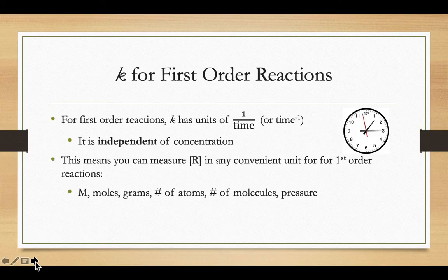The K for first-order reactions has units of one over time. It's independent of concentration. There is no concentration factor there in that value of K. There's no moles per liter or anything like that. So what that means is if it's more convenient for you to measure your concentration of R in some other form, depending on what you're measuring, to measure that value of R in moles or grams or number of molecules, or if it's a gas and you wanted to measure pressure, that would work. You don't have to use a molarity or a concentration for first-order.